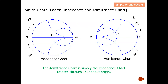For the admittance chart, when we have a negative susceptance (-jB) term, it appears above the resistance line, and a positive susceptance (+jB) appears underneath the resistance line — completely opposite from the impedance chart. This makes sense because admittance is one over impedance, and impedance is one over admittance, so they behave completely differently. Later in examples, I will illustrate this more clearly.